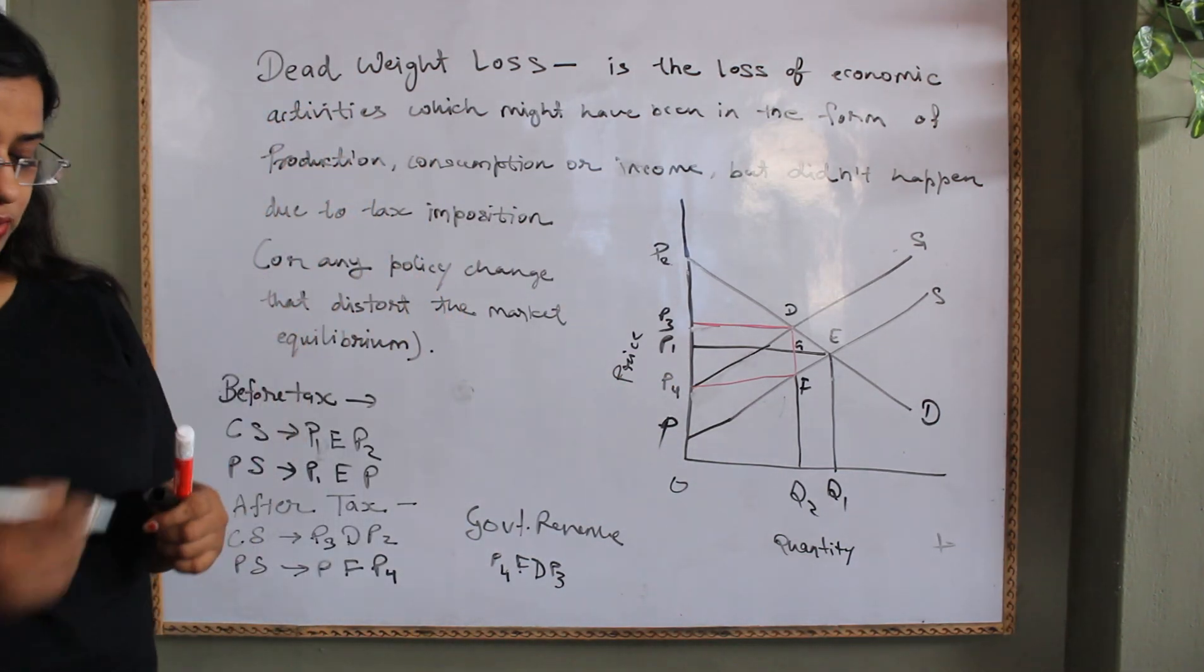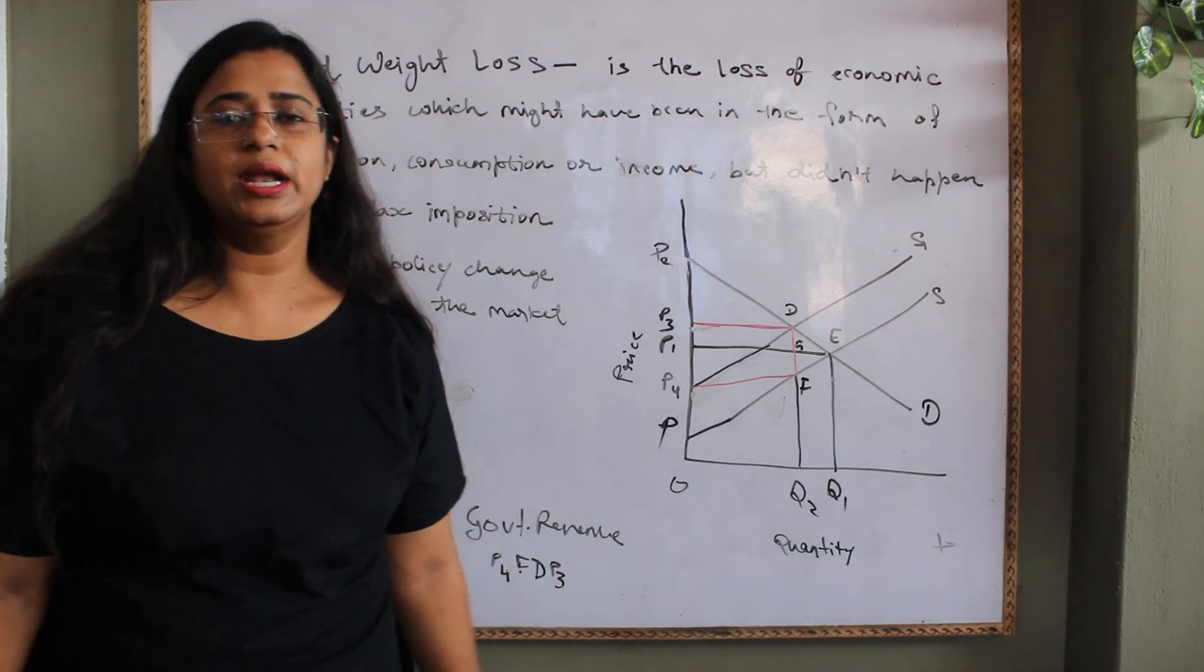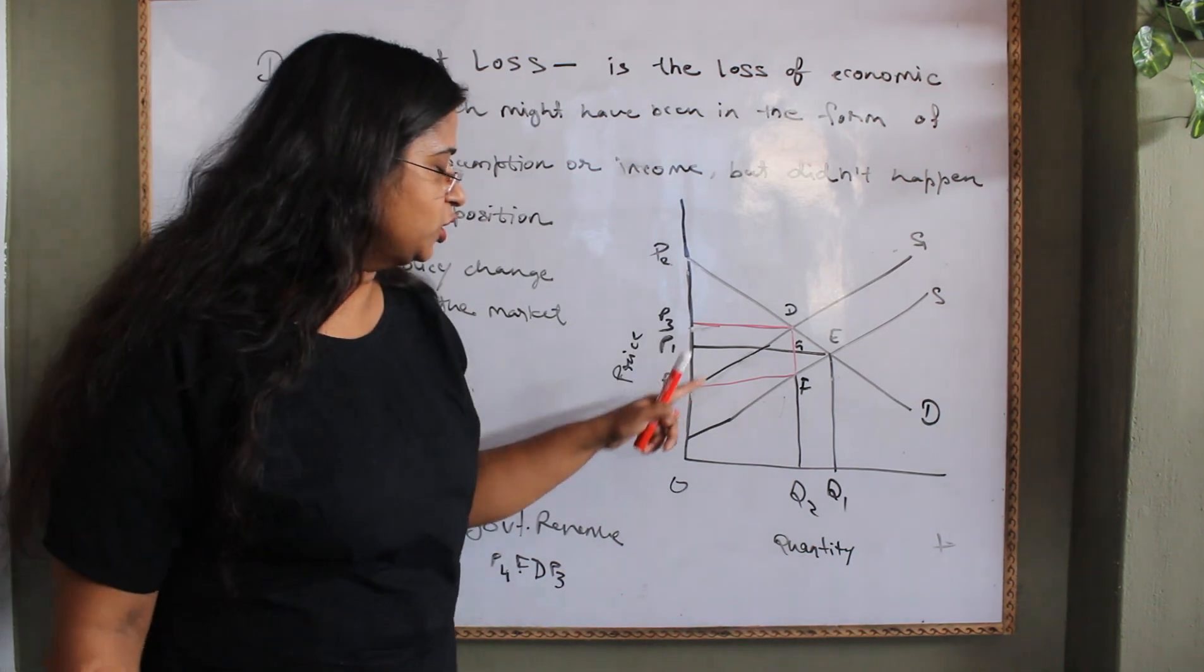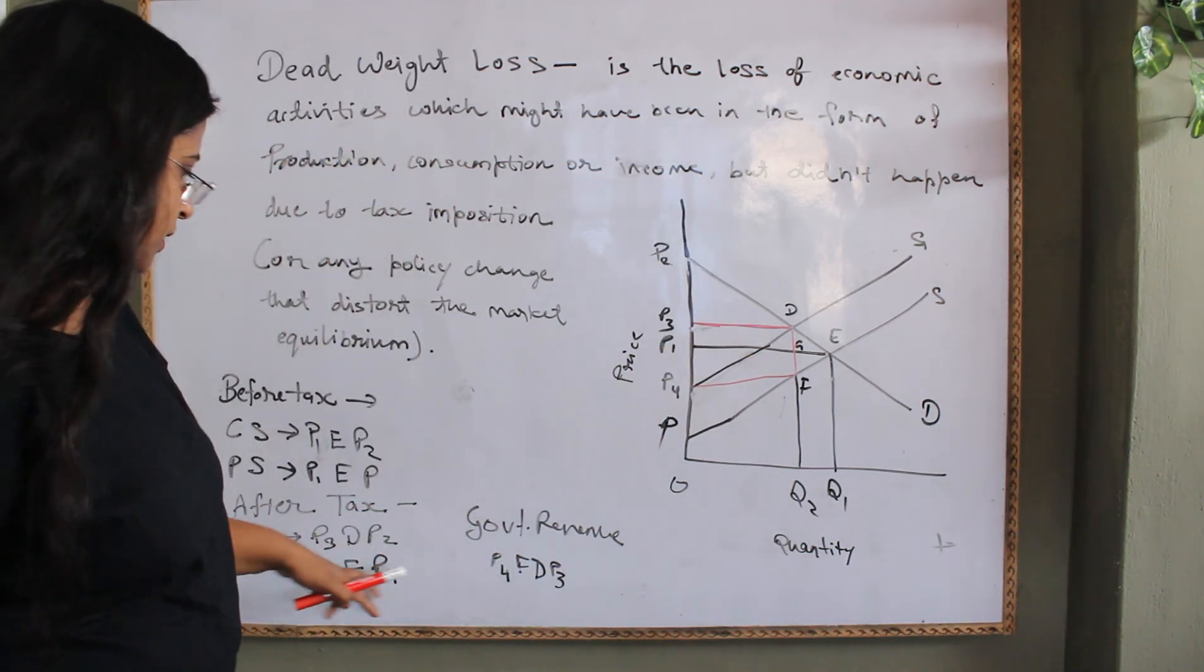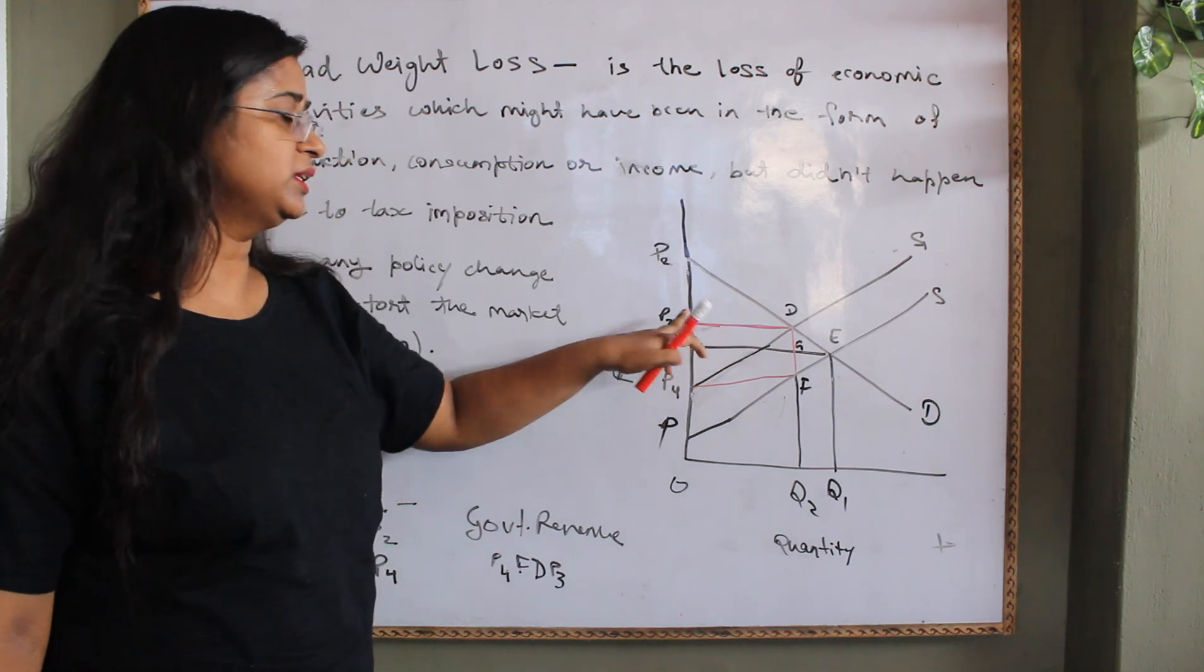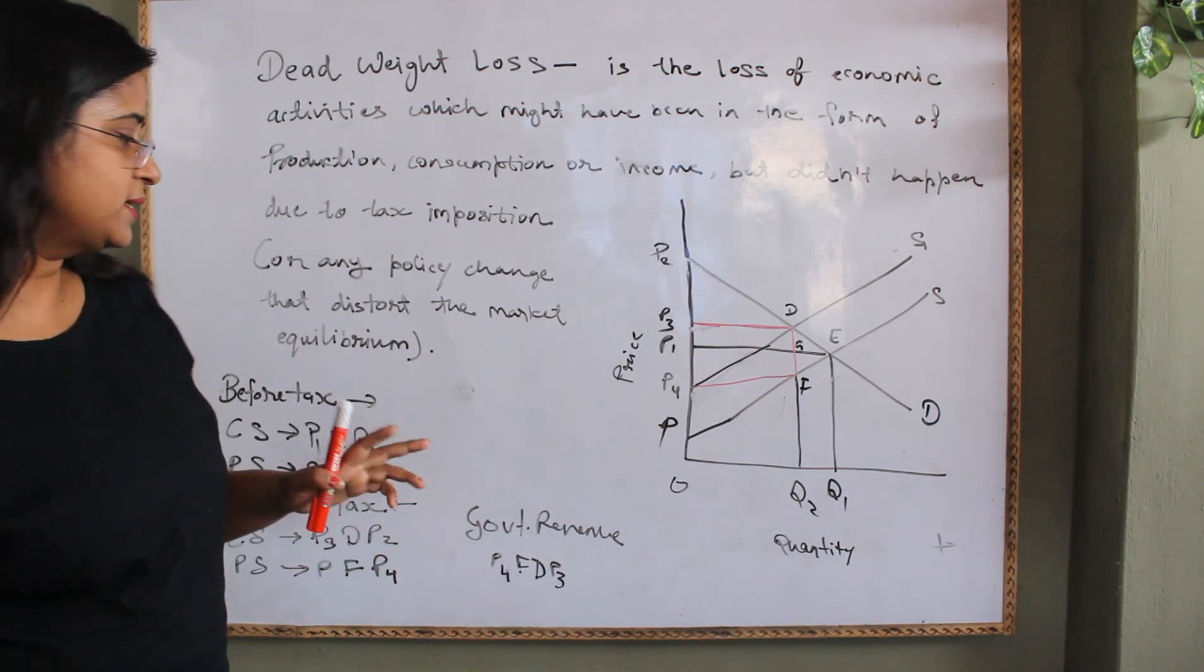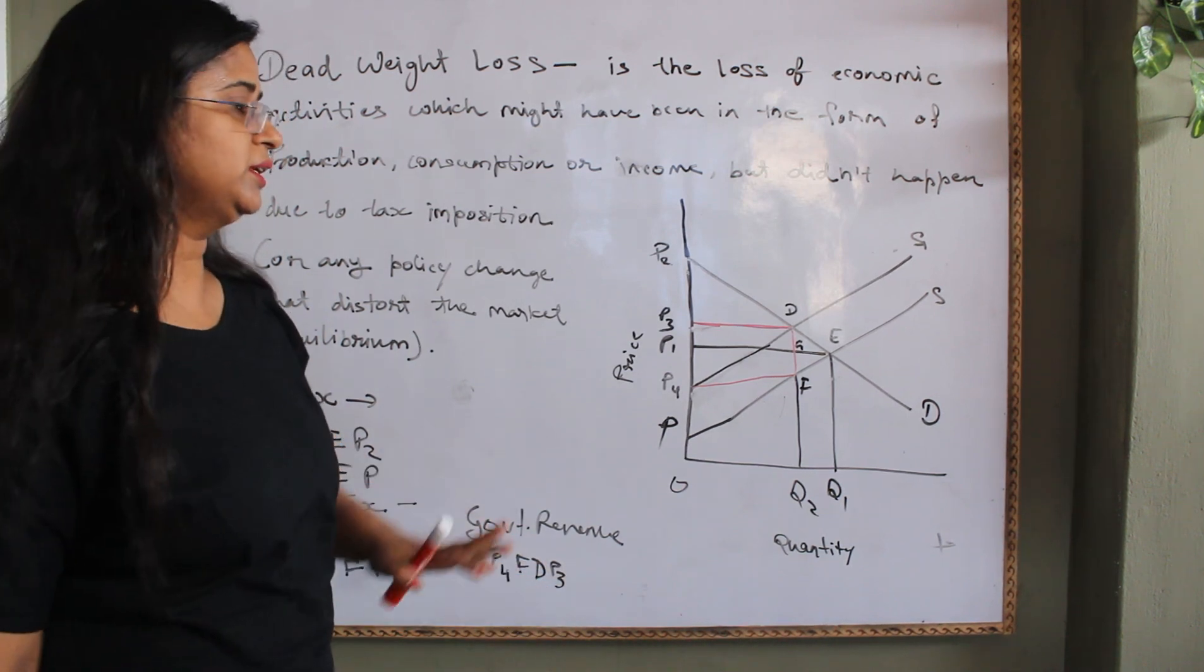The welfare of the consumer and the producer has been reduced and here you can also see a rectangle area that is P4FDP3. This rectangle area goes to the government as tax revenue, government revenue P4FDP3.